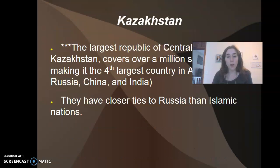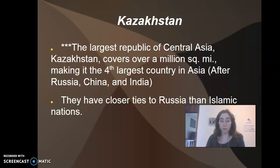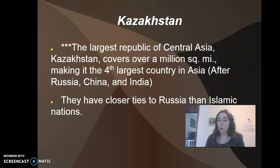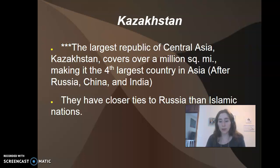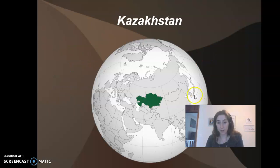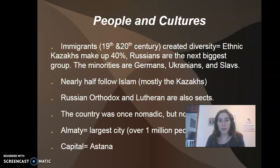Kazakhstan is the largest republic of Central Asia — it covers over a million square miles, making it the fourth largest country in Asia after Russia, China, and India. Culturally, Kazakhstan has closer ties to Russia than to any of the Islamic nations. It is a diverse area of the world, which has to do with immigration.